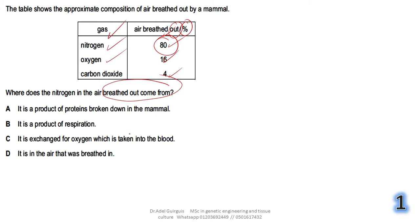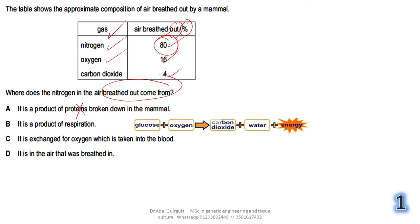Where does the nitrogen in the air breathed out come from? Option A says it is the product of proteins broken down in a mammal — proteins broken down during digestion to form amino acids taken by blood — but nitrogen gas is not released by breaking down nitrogen in our bodies, so this is wrong.